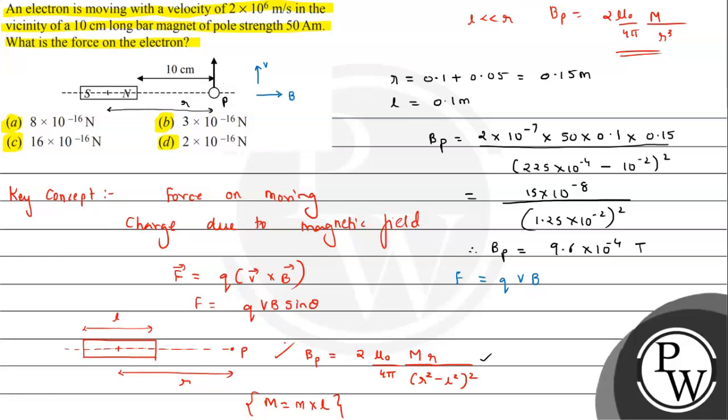1.6 × 10^-19 times velocity given 2 × 10^6, and B_P the magnitude of magnetic field we calculated 9.6 × 10^-4.